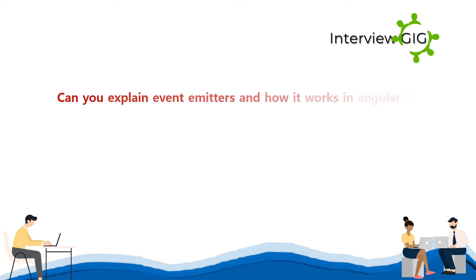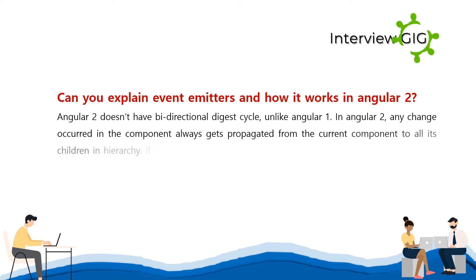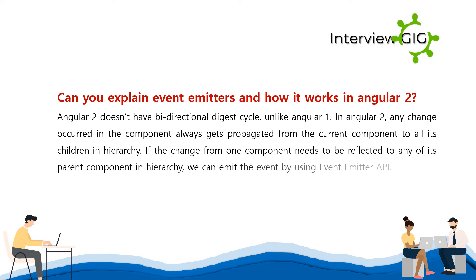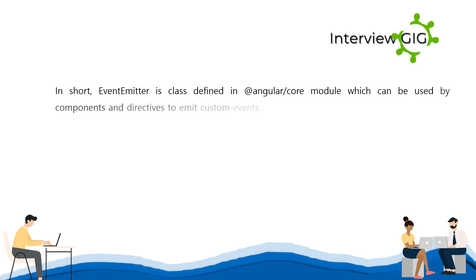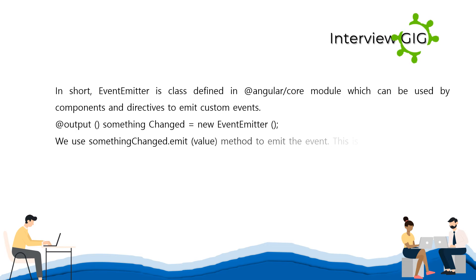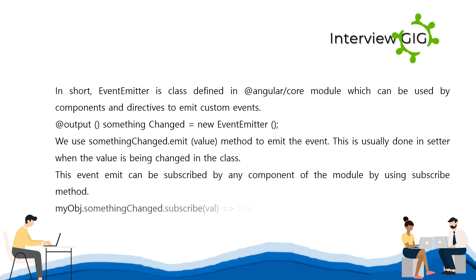Can you explain event emitters and how they work in Angular 2? Angular 2 doesn't have a bi-directional digest cycle, unlike Angular 1. In Angular 2, any change occurred in the component always gets propagated from the current component to all its children in hierarchy. If a change from one component needs to be reflected to any of its parent components, we can emit the event by using the Event Emitter API. EventEmitter is a class defined in the @angular/core module which can be used by components and directives to emit custom events. We use somethingChanged.emit() to emit the event, usually done in a setter when the value is being changed. This event emit can be subscribed by any component using the subscribe method.